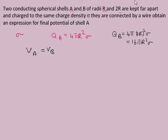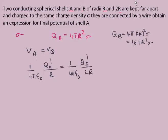After connecting, the charges QA and QB will redistribute and will not remain the same. So we write the new charges as QA' and QB'. Setting VA = VB: (1/4πε₀)(QA'/R) = (1/4πε₀)(QB'/2R). The common factor 1/4πε₀ cancels, and R cancels as well.